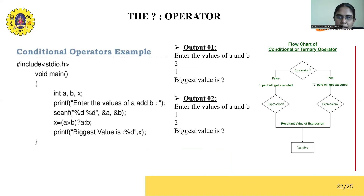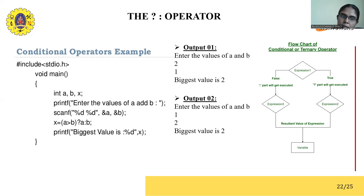Inside the main program I have declared three local variables a, b, and x, and getting values for two variables from the user at runtime: a and b. For example, let us assume I'm giving the value of a as 2 and b as 1. The next statement is: x = a > b ? a : b, which is the conditional operator statement.